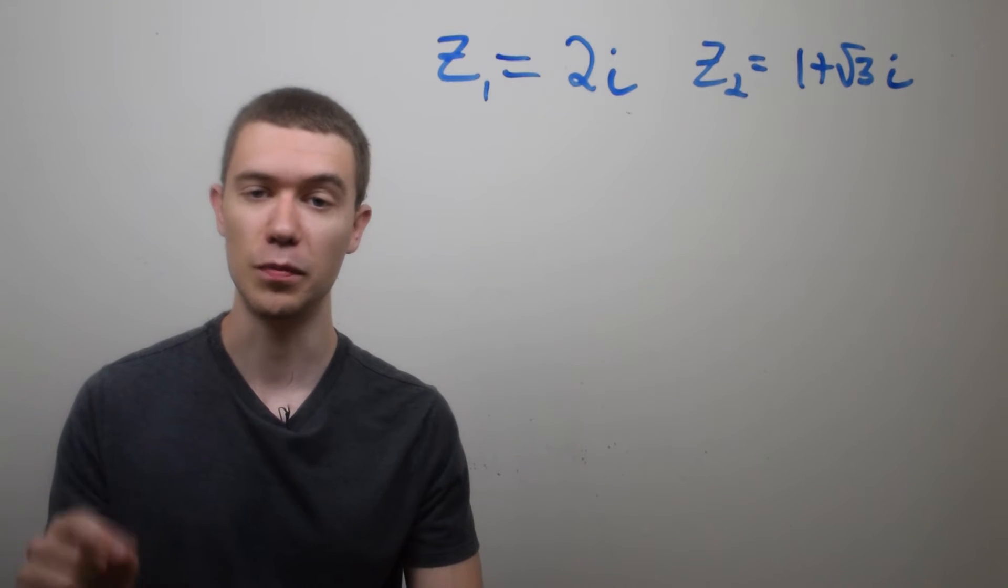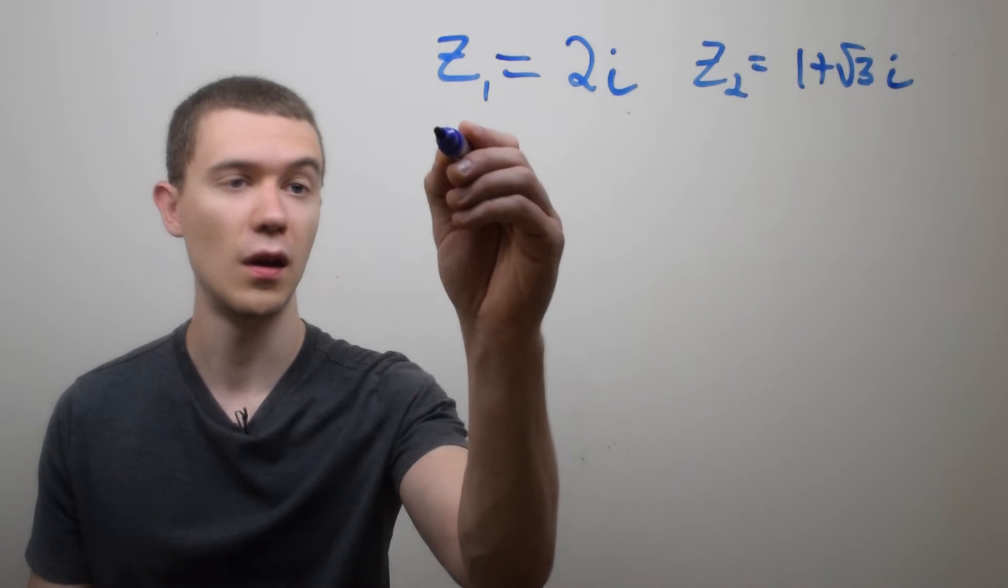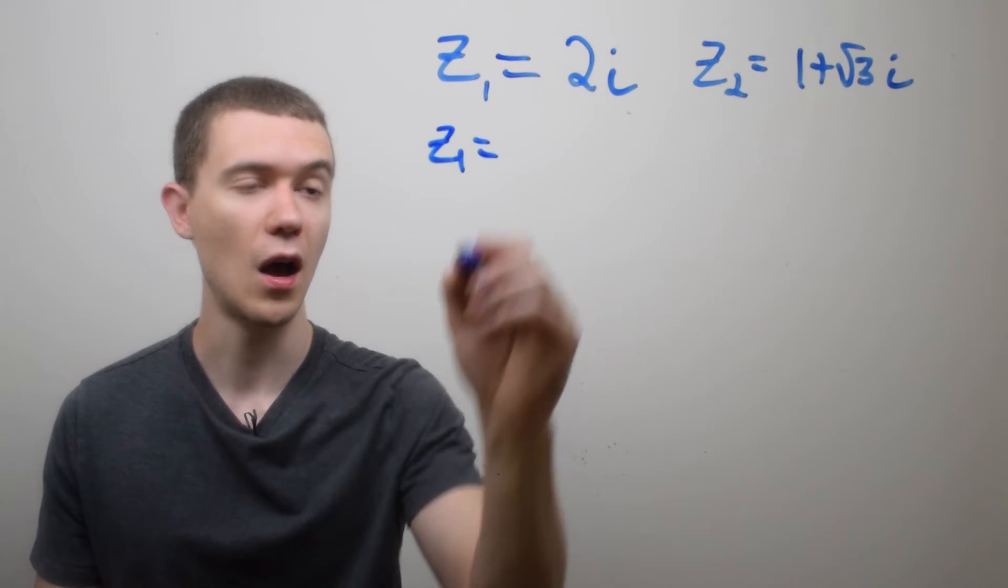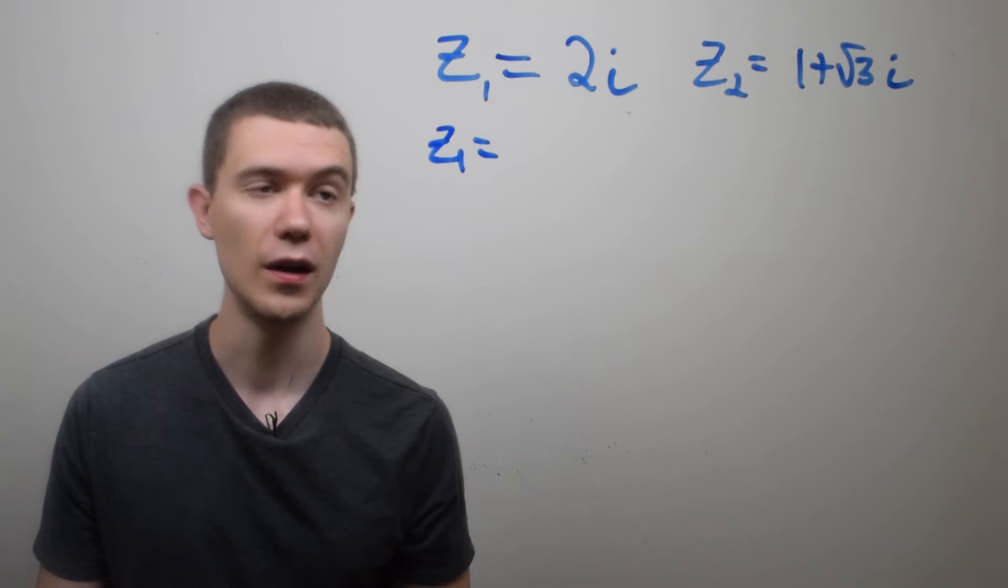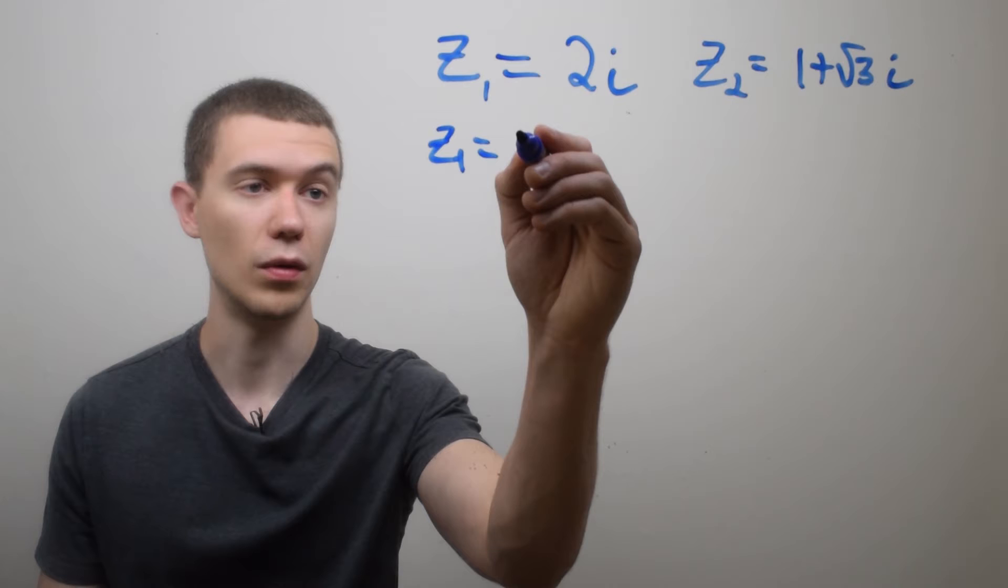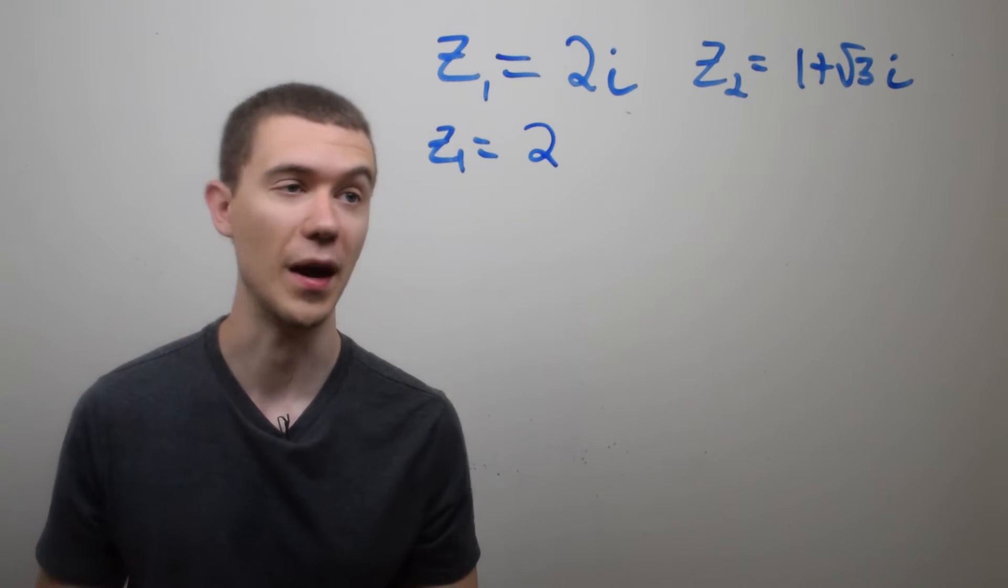I'm going to get into just putting these into their polar forms. So z1 is just equal to the modulus of 2i or the length of 2i. The length of 2i is just 2, right? That's because all you would have to do is square 2 and then square root it. You would get back to 2.